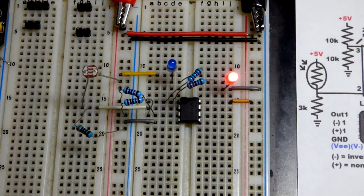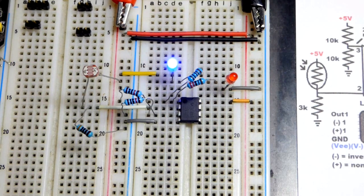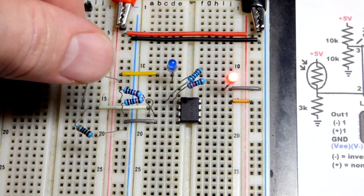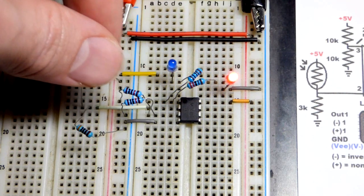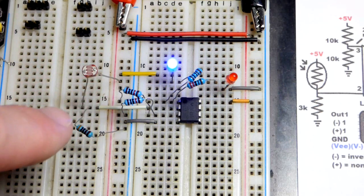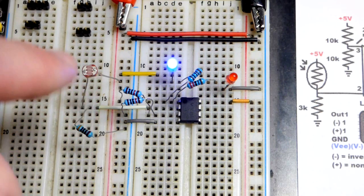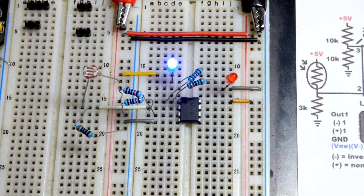I can even dim the lamp a little and you can see that it switched. When it gets dark enough, it has more resistance on the positive supply, giving a lower voltage there. Once it drops below our reference voltage, the output goes high.